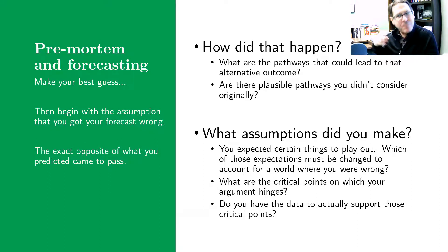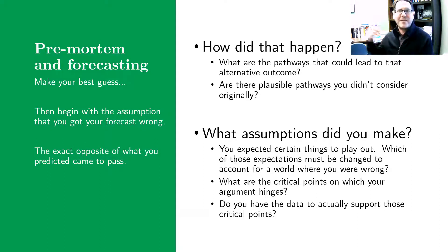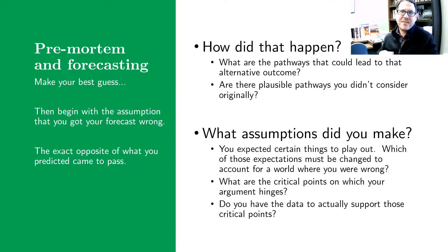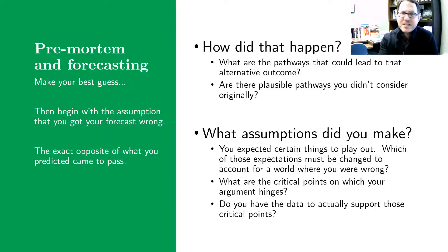So you start brainstorming: what are the pathways that could have led to that exact opposite outcome? How would we have gotten from here to there? Sketch those out and think about things that you might have missed and didn't consider in that process.